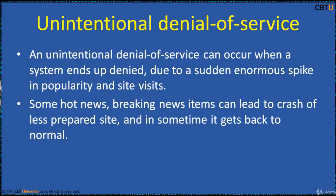An unintentional denial of service can occur when a system ends up being denied due to an enormous spike in popularity. Breaking news items can lead to a rush of traffic to less-prepared sites, which eventually returns to normal. One example: when Michael Jackson died in 2009, websites such as Google and Twitter slowed down and many other sites crashed. Routers have also been known to create unintentional DDoS attacks due to overloaded NTP servers. Unintentional denial of service may also result from a prescheduled event, such as the release of college or university exam results on a particular day, attracting a lot of traffic and overloading the servers.